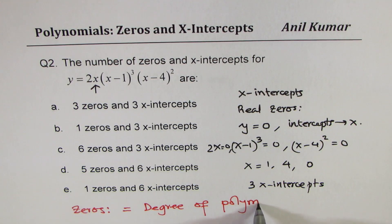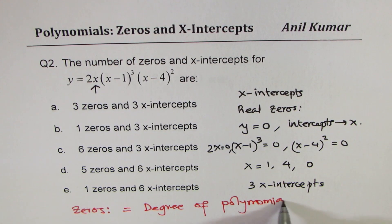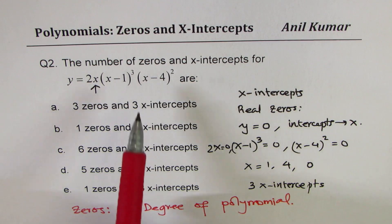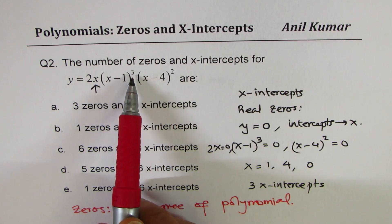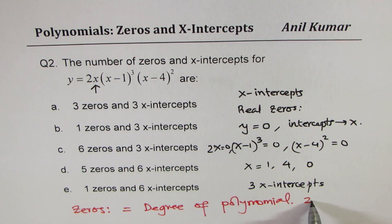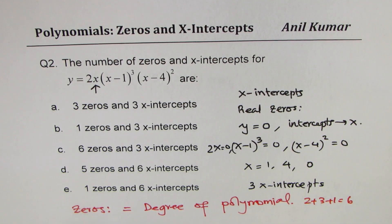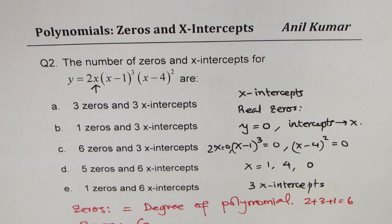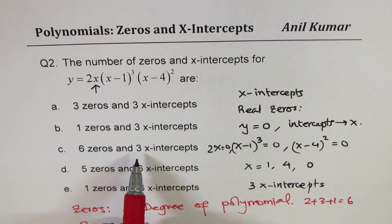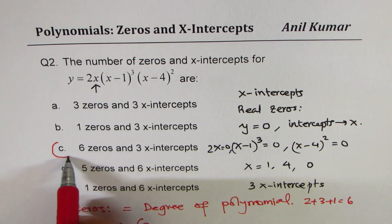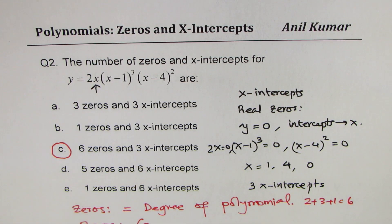The degree here is 1 + 3 + 2 = 6, so the number of zeros is six. Therefore six zeros and three x-intercepts — option C is the correct answer.